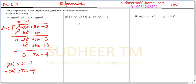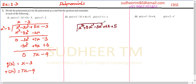Now coming to the second case. We have p of x is x⁴ minus 3x² plus 4x plus 5. Note that x³ is missing, so while writing your polynomial you should write x⁴ plus 0x³ minus 3x² plus 4x plus 5. Then it is divided by x² minus x plus 1, which should be written in order as x² minus x plus 1.